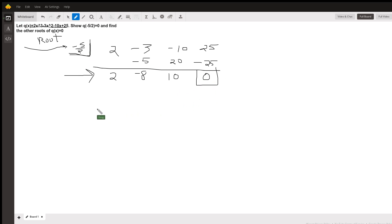The remainder is zero, so negative five halves is a root. So if you want to, you can write q of x as x minus negative five halves or x plus five halves times 2x squared minus 8x plus 10 is the other factor.